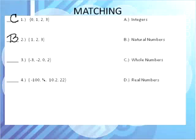For number 3, negative 3, negative 2, 0, 2. Those are considered integers. Integers contain positives and negatives, but no fractions or decimals.